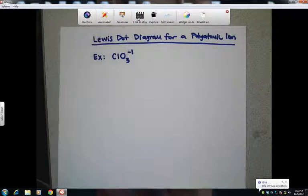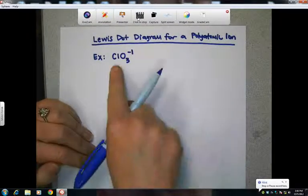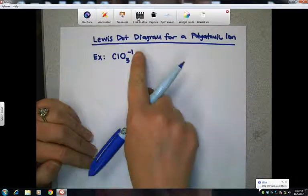So what do you do if you're trying to draw the Lewis dot diagram for something like chlorate? Chlorate is a polyatomic ion. It has a charge. It's an ion.